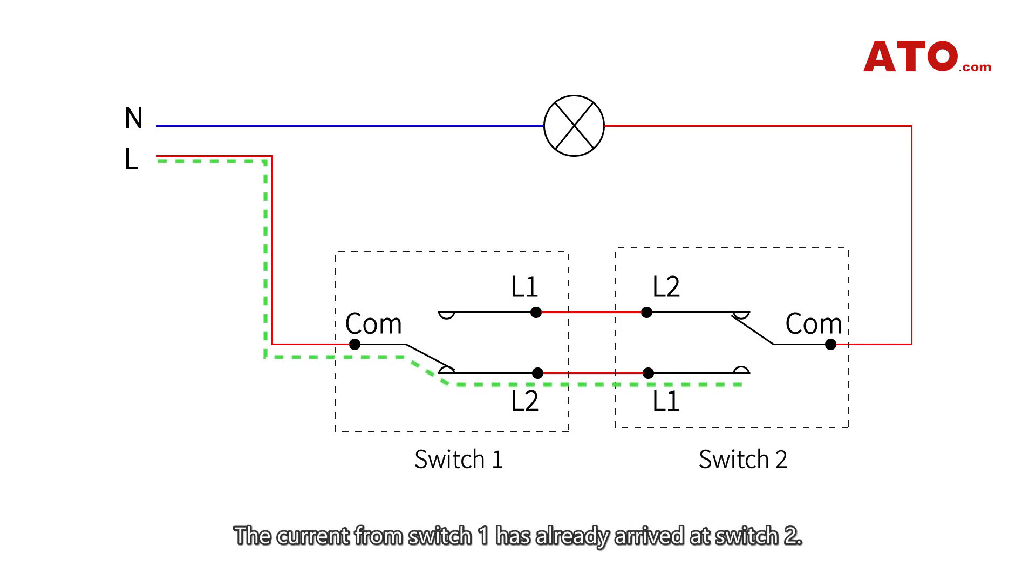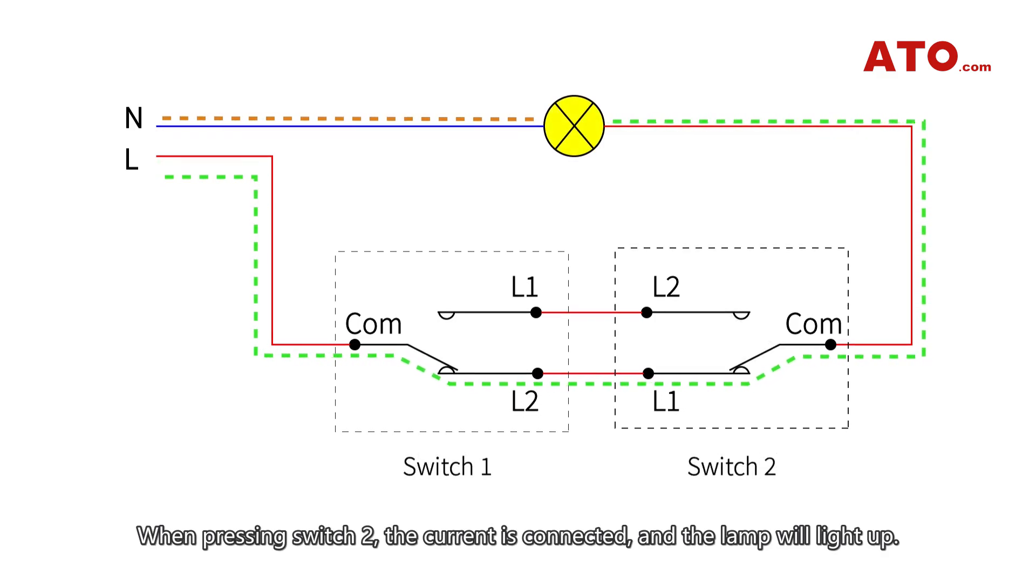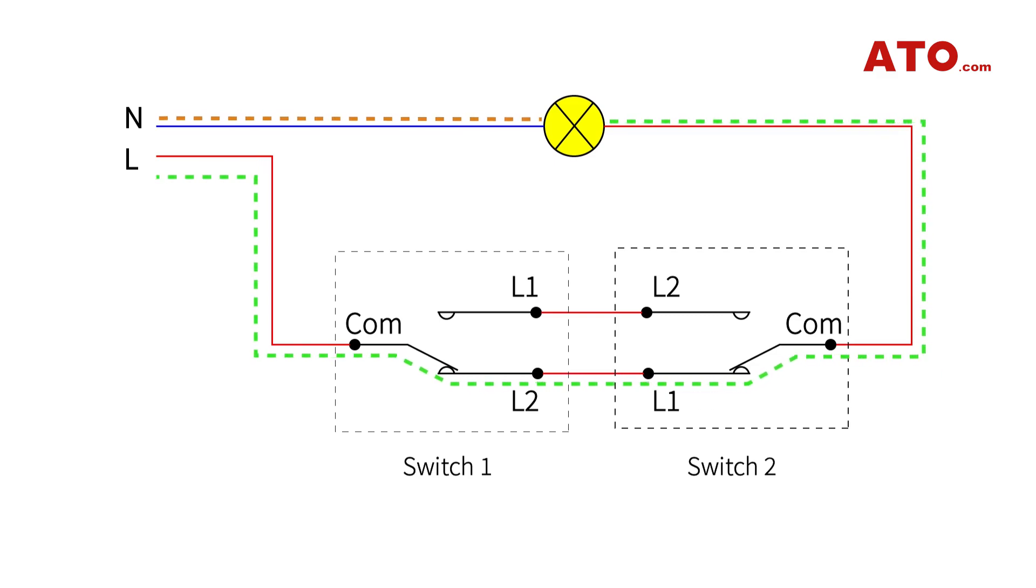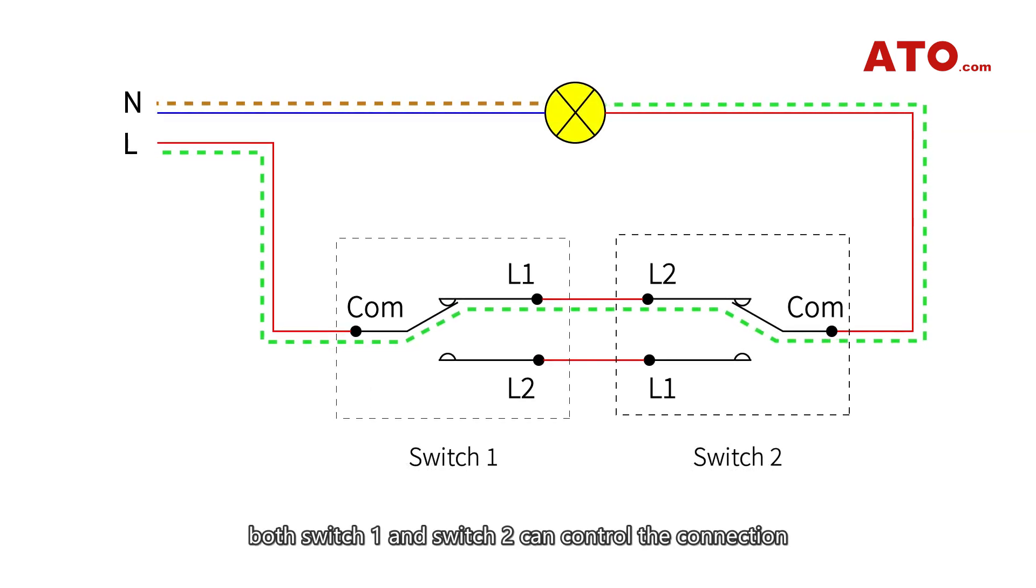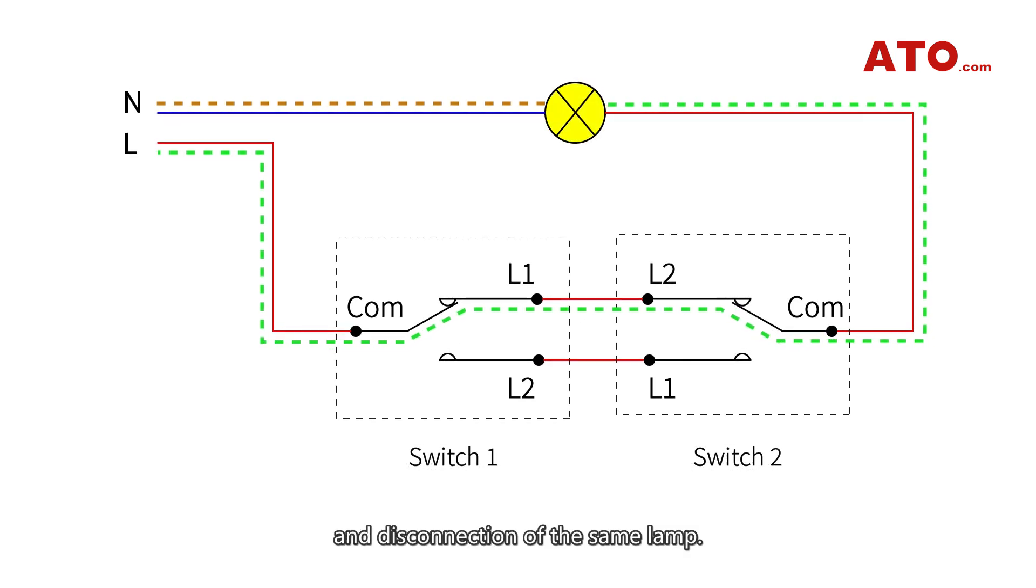The current from switch one has already arrived at switch two. When pressing switch two the current is connected and the lamp will light up. Similarly regardless of the positions of switch one and switch two, both switches can control the connection and disconnection of the same lamp.